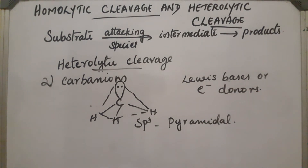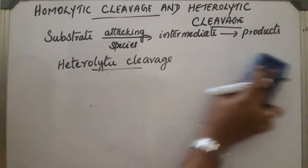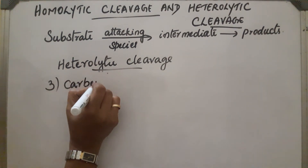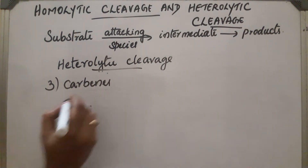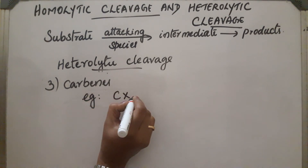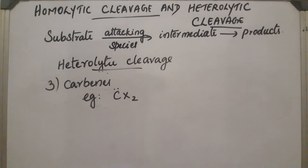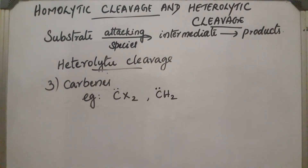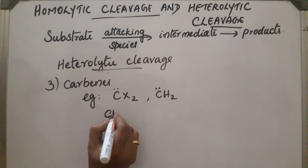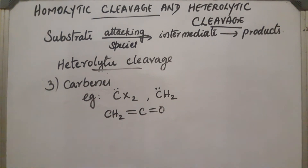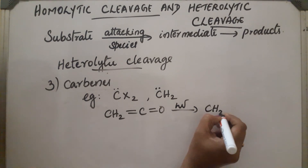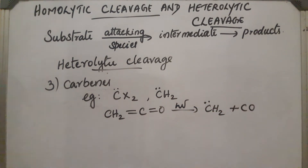The third intermediate is carbenes. An example of a carbene is CX2. Carbenes are reactive intermediates formed in organic reactions.